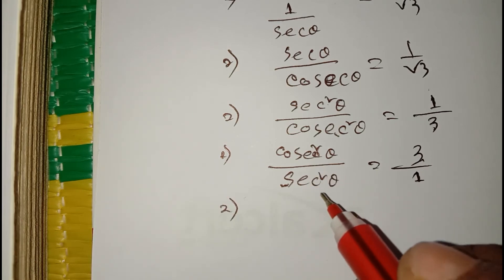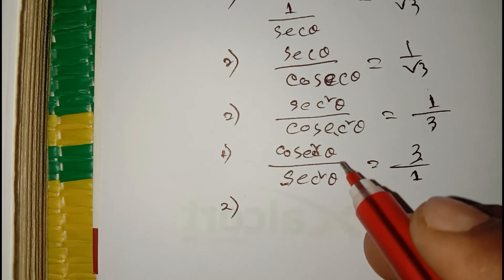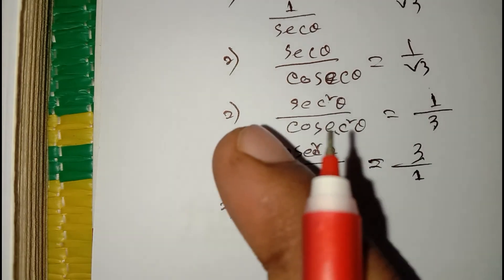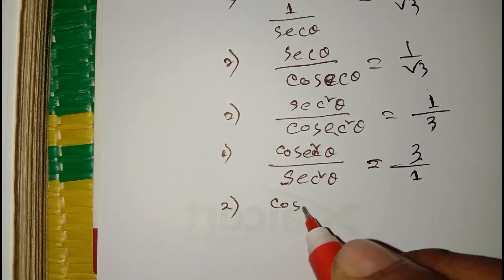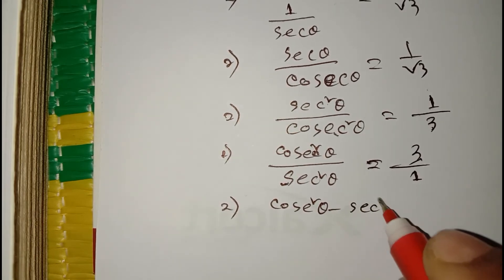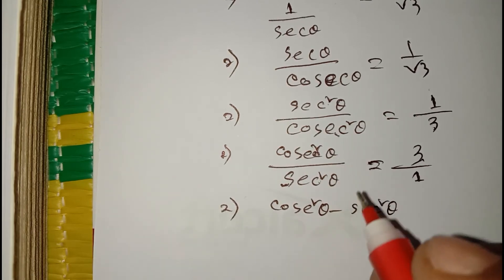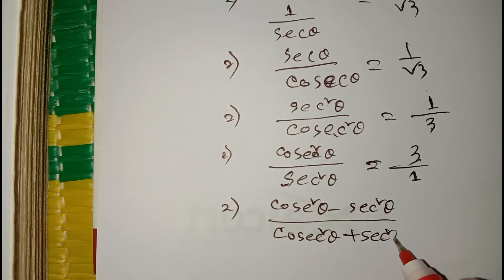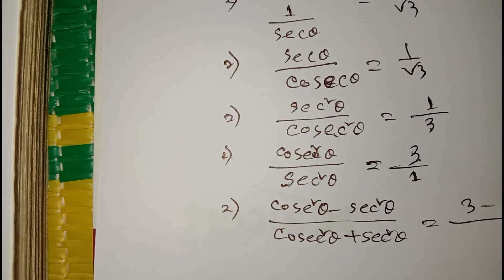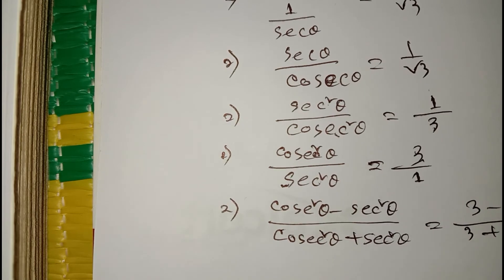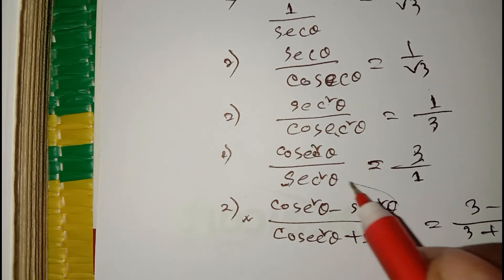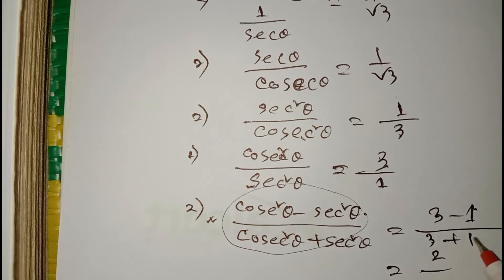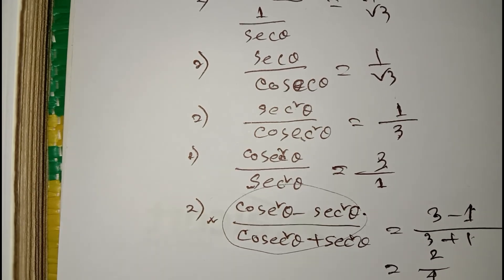As our question requires cosec square theta minus sec square theta in the numerator and cosec square theta plus sec square theta in the denominator, we subtract and add accordingly. So numerator becomes 3 minus 1 equals 2, and denominator becomes 3 plus 1 equals 4.